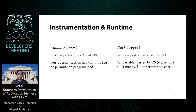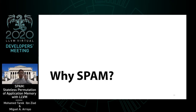While the previous example showed heap memory being instrumented, we also support stack and global memory. The instrumentation for loads and stores with spam_getperm_offset remains exactly the same. For globals in the .data section, we emit a register_global call into the global constructor list to permute memory on program load. Those in the .bss section, which are zero-allocated, will be permuted normally when written to. For stack, similar to globals, we emit a register_stack call at the beginning of main to permute variables passed by the OS, namely argv.